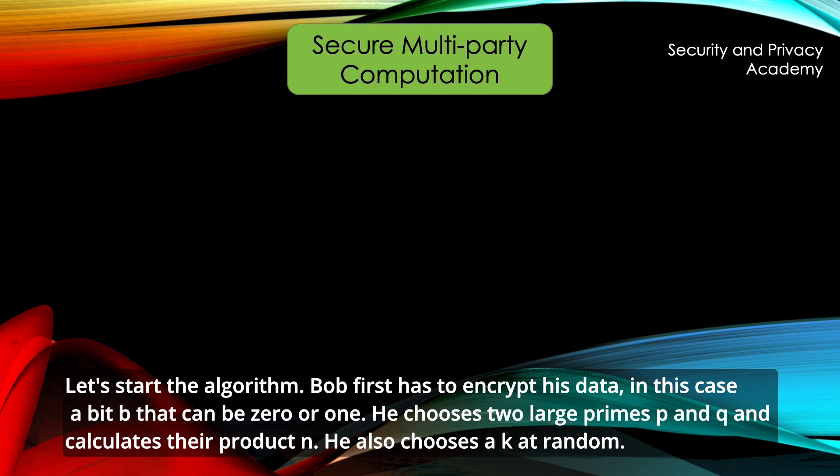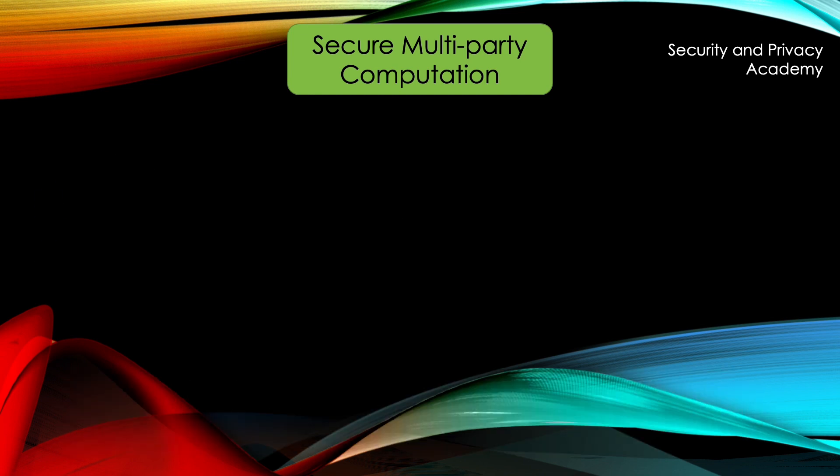Let's start the algorithm. Bob first has to encrypt his data, in this case a bit b that can be 0 or 1 and he chooses two large primes p and q and calculates the product n. He also chooses a k at random.